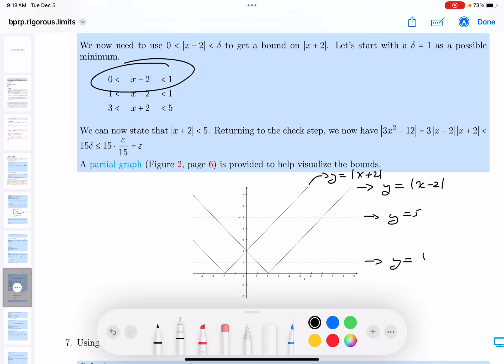Alright, so I want that x minus 2 between 0 and 1. And I led this to remove the absolute value symbol to the x plus 2 between 3 and 5.